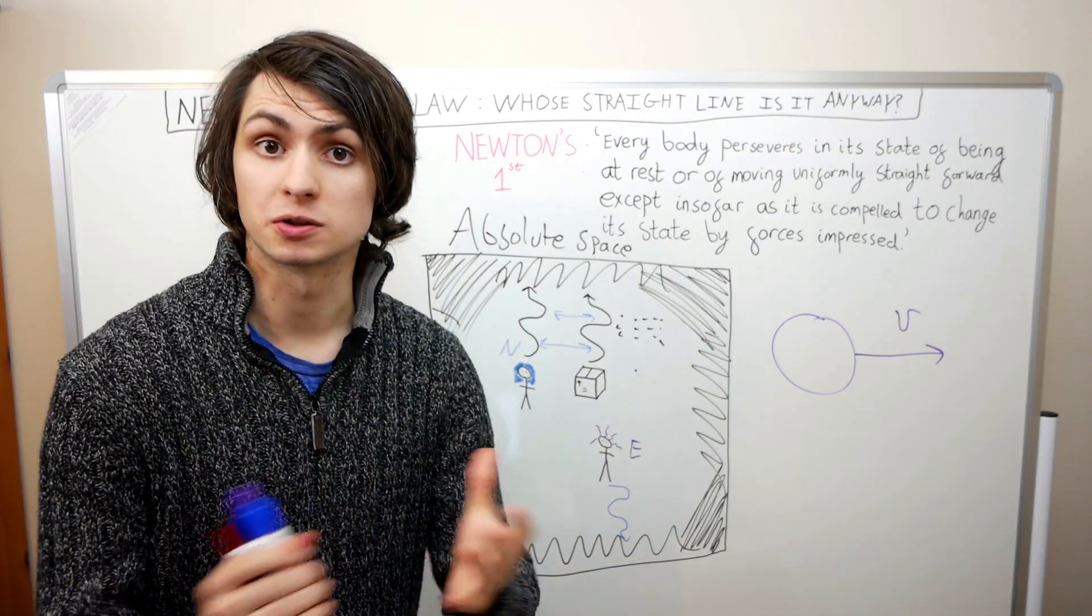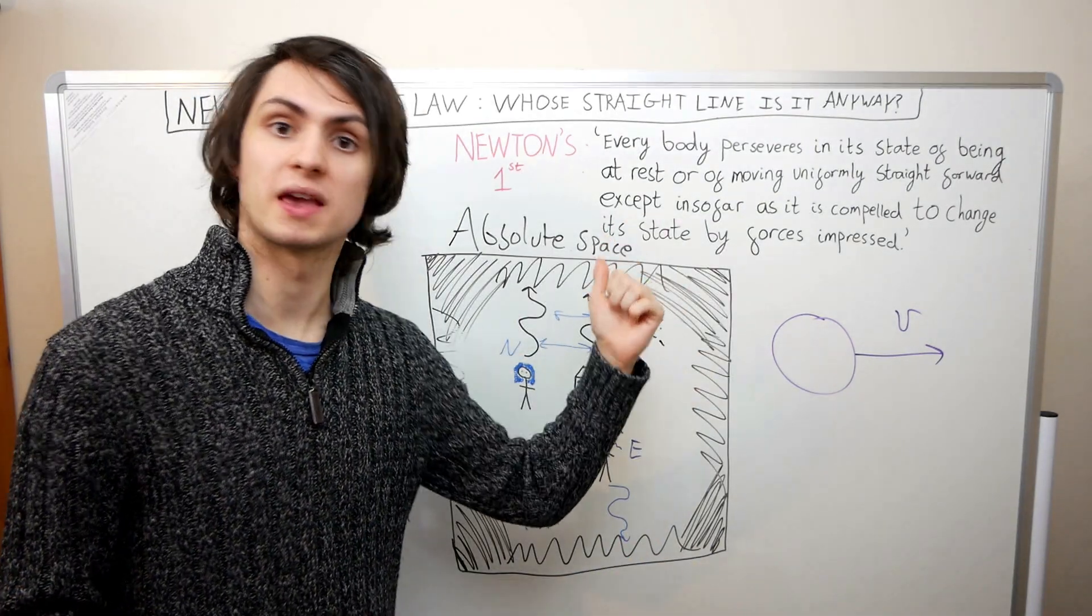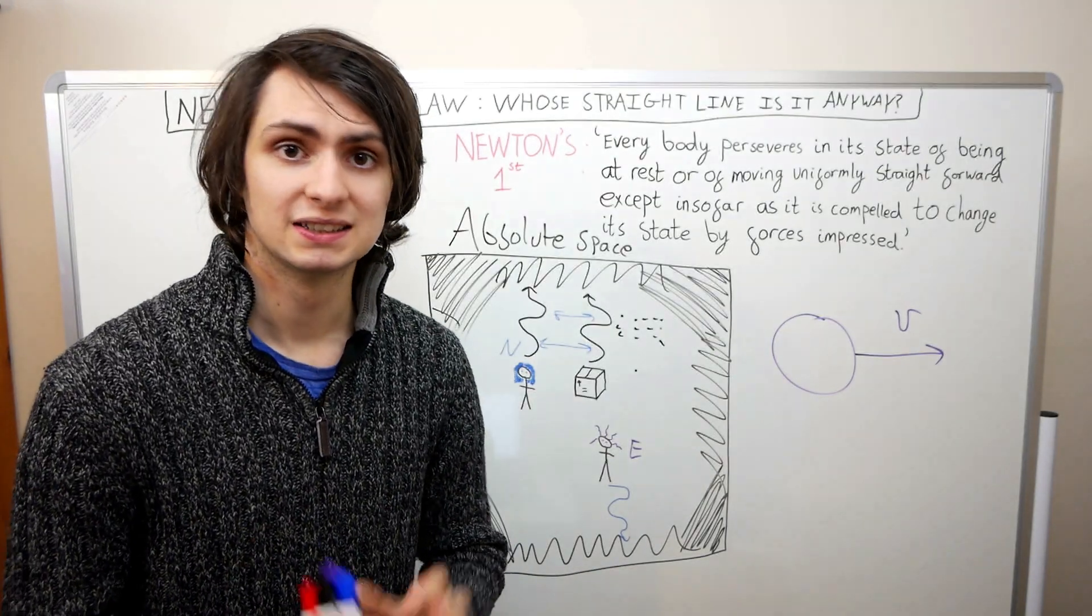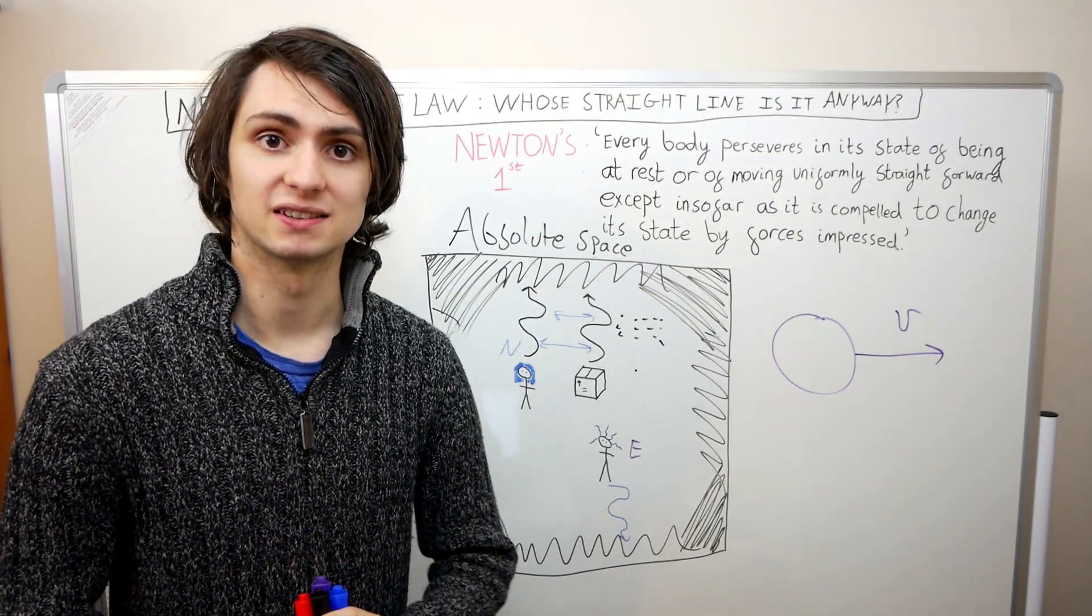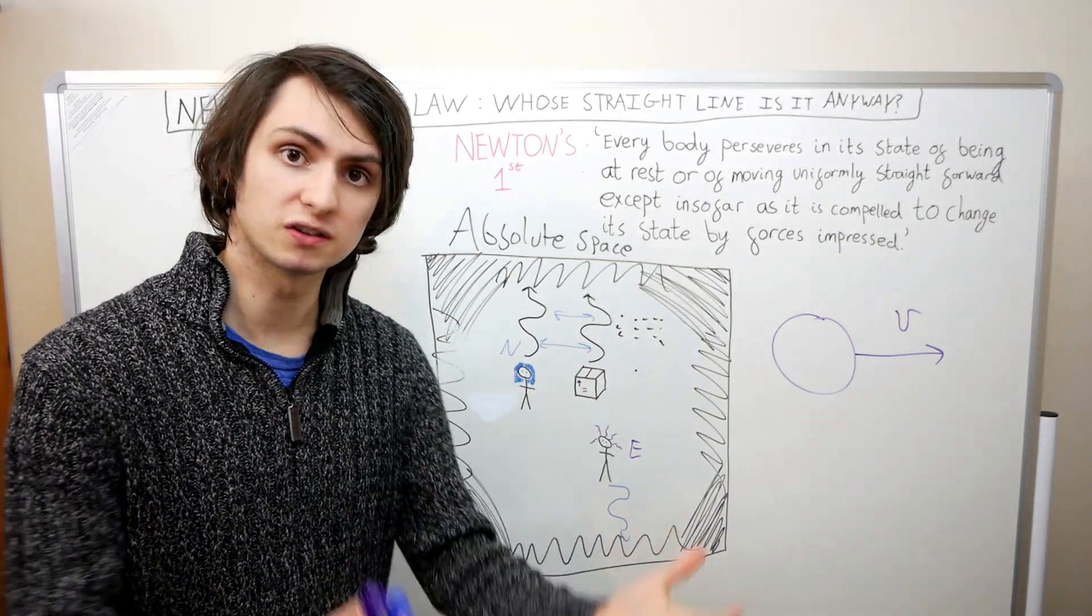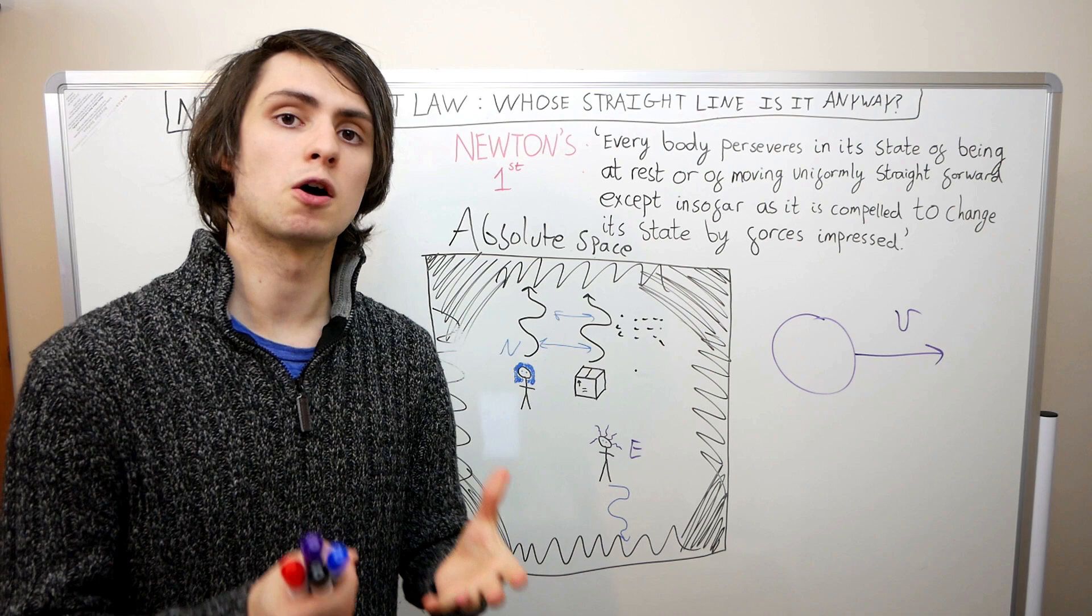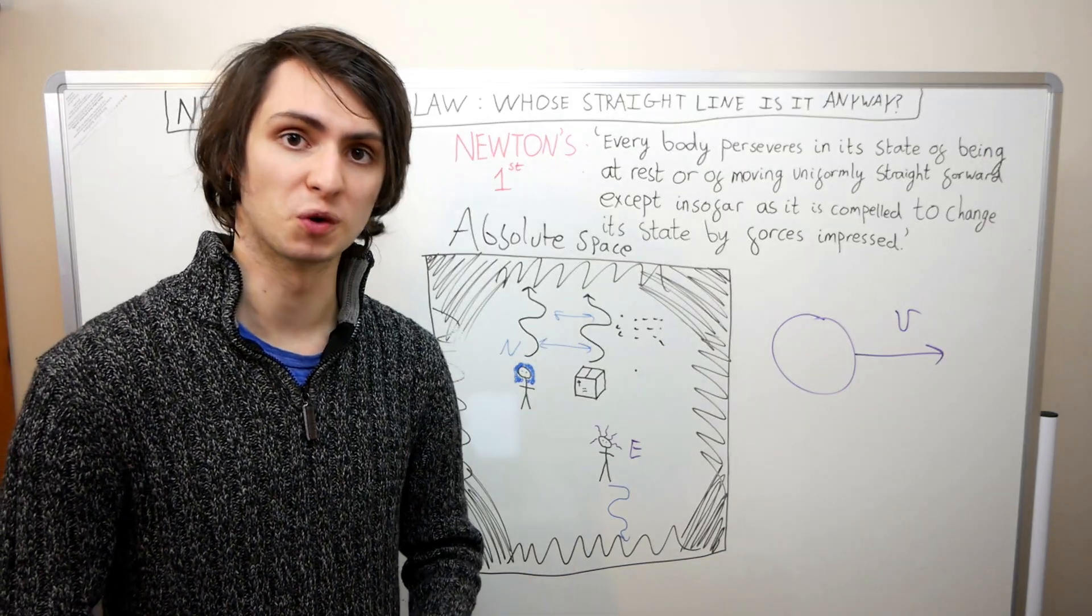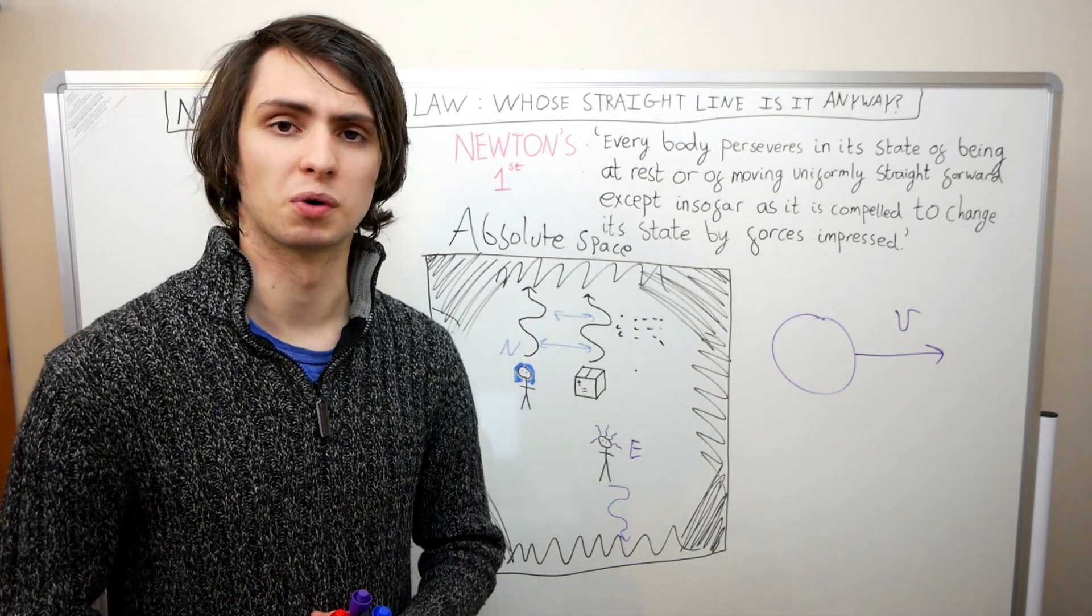So, if we have absolute space, does this mean that the first law makes sense now? I'll let you into a little secret. Nothing in physics really makes any sense. Sure, postulating the existence of absolute space certainly fixes a problem with the first law. There's now a matter of fact over whether an object really is experiencing a force. But we're left with a practical problem.